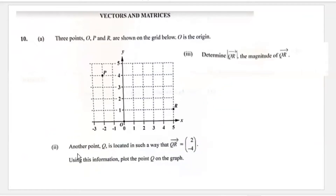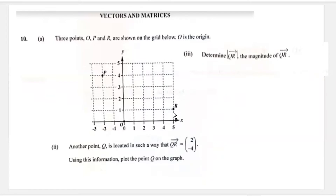Part two says another point Q is located such that vector QR is equal to (2, -4), and it says using this information plot the point Q on the graph. You could either use a formula or use some inference. Since this is R and we're looking for point Q, if we move from Q to R we went two spaces to the right.